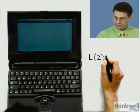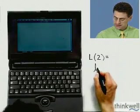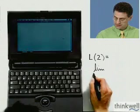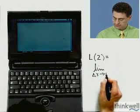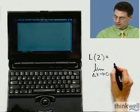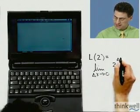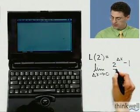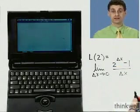Which I remind you, is the limit as delta x approaches 0 of 2 to the delta x minus 1 all over delta x. That's the limit I want.